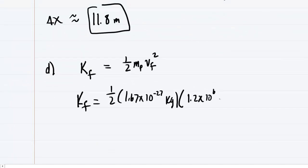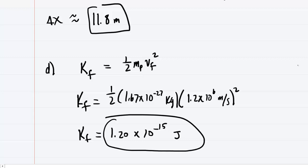So 1.2 times 10 to the sixth meters per second, and don't forget to square it. Let's punch this in. And when you do that, you get the final kinetic energy is approximately 1.20 times 10 to the power of negative 15, and the standard unit of energy would be joules. So this is the correct answer to part D.